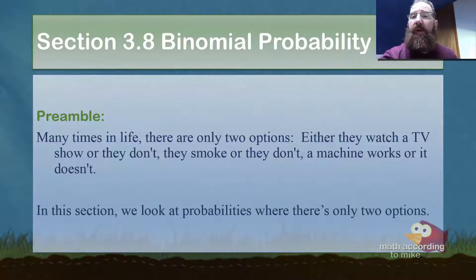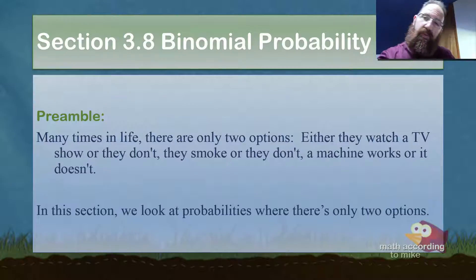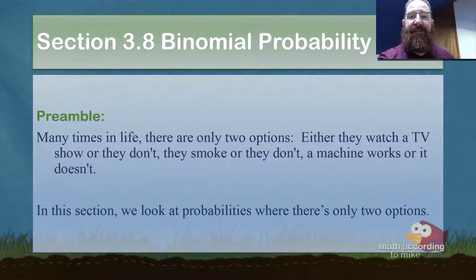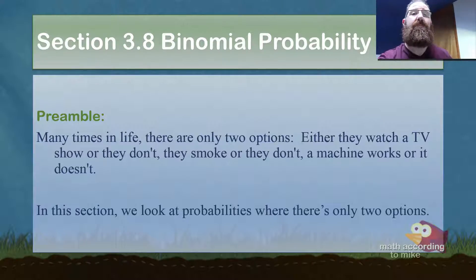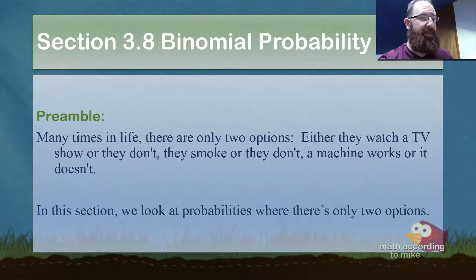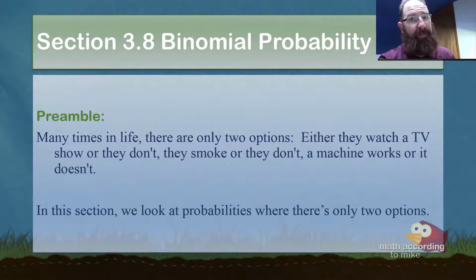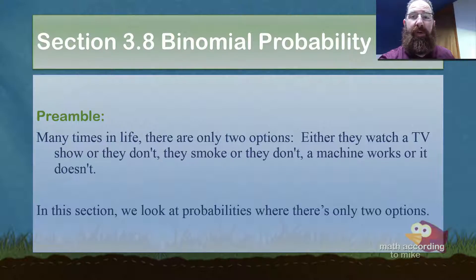Section 3.8, Binomial Probability. This is also known as a Bernoulli trial, which you'll see how that's spelled in the next slide. There are many times in life where there are only two options: either you watch a TV show or you don't, you smoke or you don't, a machine works or it doesn't. In these scenarios where there's only two options, and there are three other requirements, you have this magical thing called a binomial probability.